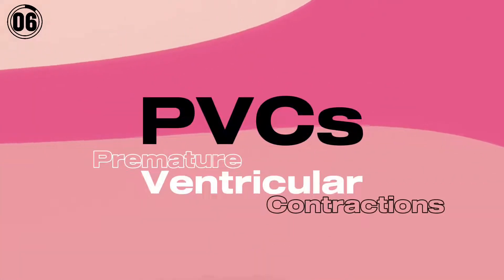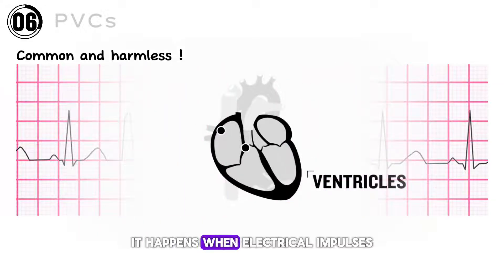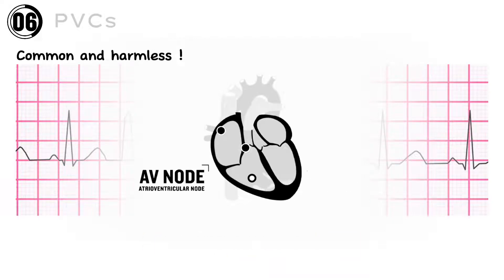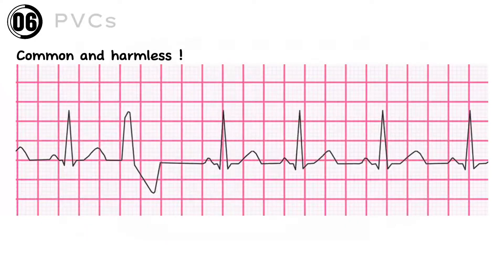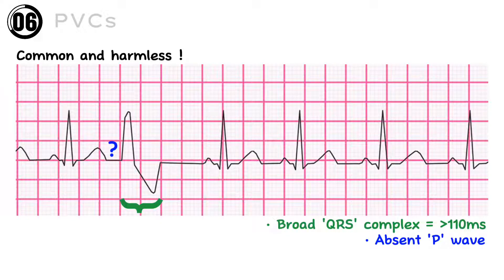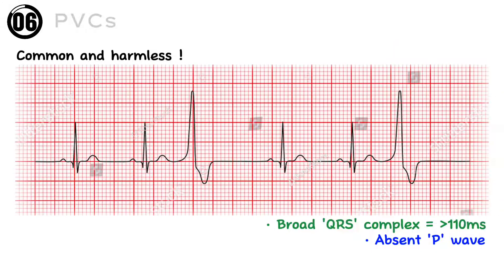ECG number 6: PVC, or Premature Ventricular Contractions — a very common and usually harmless cardiac condition. It happens when electrical impulses generate from ectopic sites in the ventricles earlier than usual, and the size and shape of the ECG wave depends on the ectopic site. In the ECG, there is a broad QRS complex with an absent P wave due to early depolarization of the ventricles. When there is a PVC after every single regular beat, it is called bigeminy, and when there is a PVC after every two regular beats, it is called trigeminy.